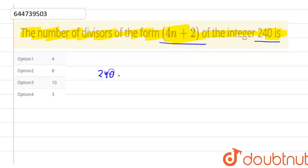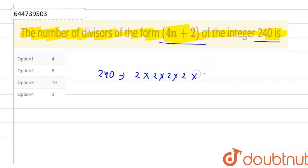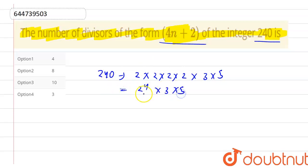If we take 240, the factors of 240 will be 2 × 2 × 2 × 2 × 3 × 5. This can be written as 2 raised to the power 4, into 3, into 5. These are the prime factors of 240.